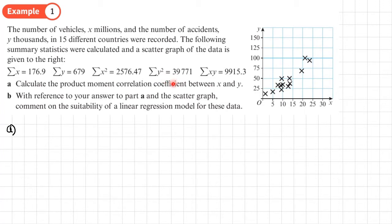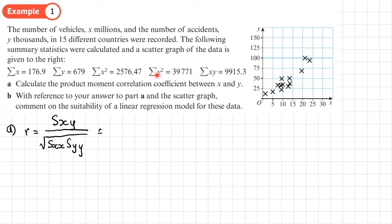Remember, when we use our calculator we type in data from a table. There's no table here, only the summary statistics. So let's write down the formula from the formula book: R equals SXY divided by the square root of SXX times SYY. We now plug in the values. N is 15, since there are 15 different countries.